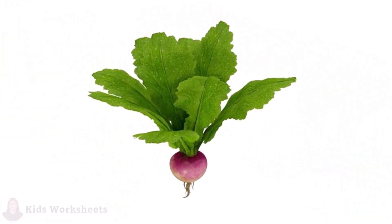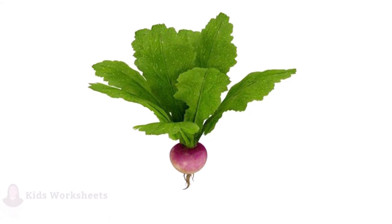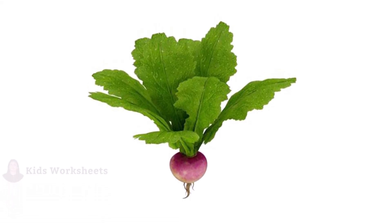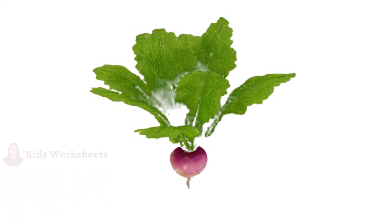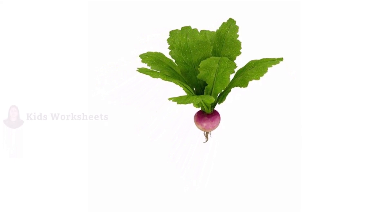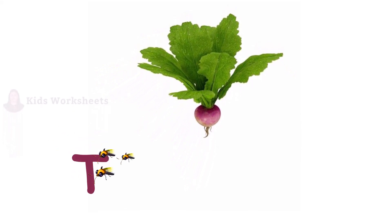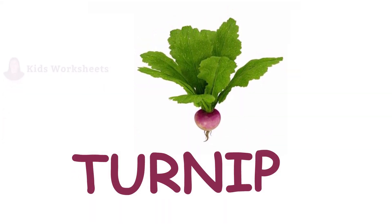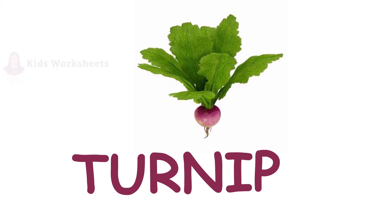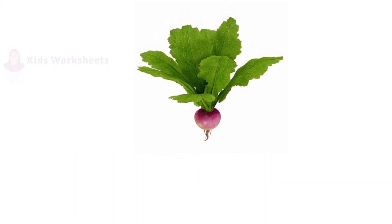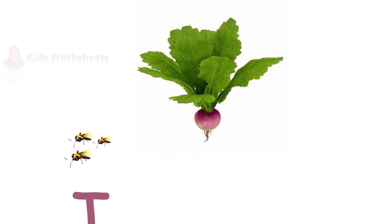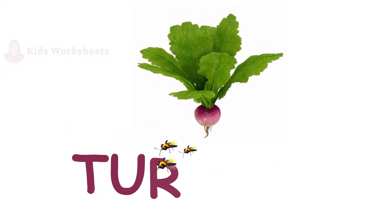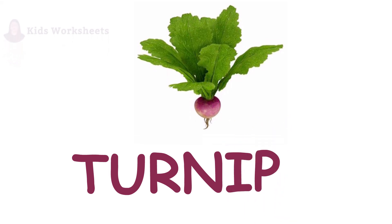Next vegetable is Turnip. This is a turnip. The spelling of turnip is T-U-R-N-I-P. Turnip. Once again, repeat with me: T-U-R-N-I-P. Turnip.